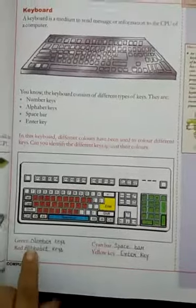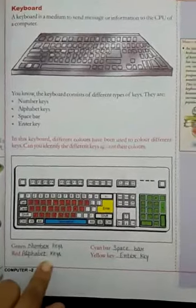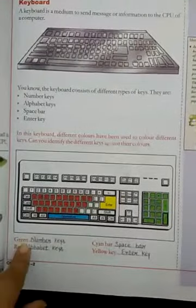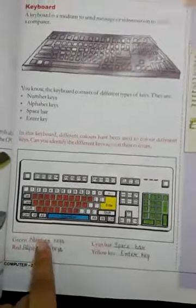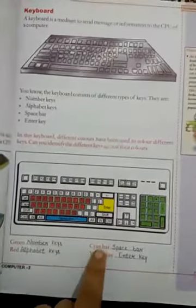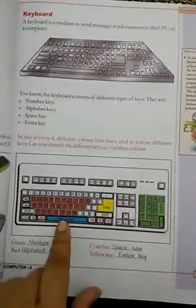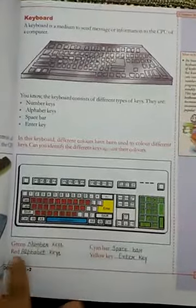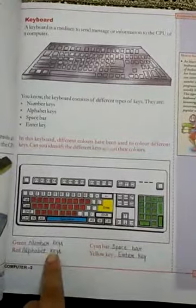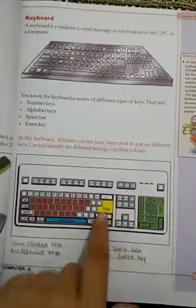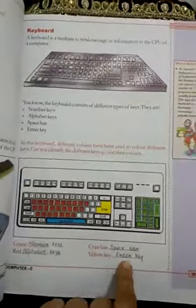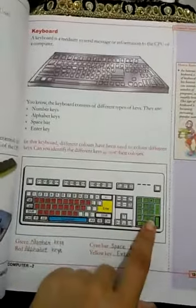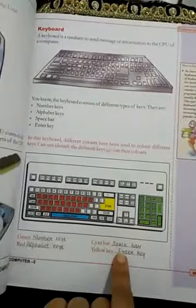In this picture, there are many colors. The red color shows the alphabet keys. The green color shows the number keys. The yellow key is the enter key. And the space bar is also shown. Which is the longest key of the keyboard? The space bar is the longest key of the keyboard.